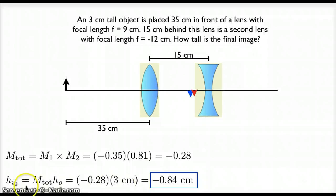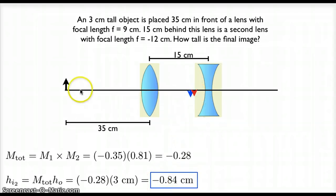So, how tall is my final image? It is my total magnification times the height of the original object: negative 0.28 times 3 centimeters. My final image is 0.84 centimeters, and it is inverted. The final image is shown in red and the original object is in black. To summarize: I solved the lens equation for the first lens, found my object distance for lens number 2, solved the lens equation for the second lens, and then multiplied the magnification from each lens together to get my total magnification. That times my object height gives me the height of the final image.